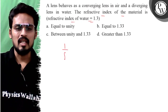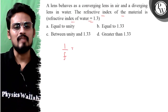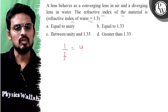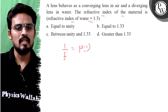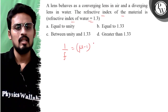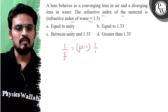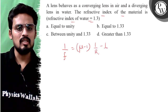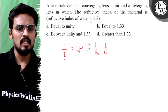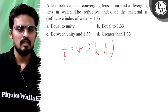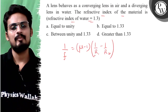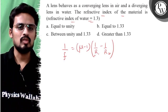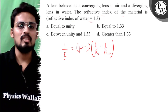The lens maker's formula says that 1/f = (μ - 1)(1/R1 - 1/R2). Okay, easy — now let's think about it. A lens behaves as a converging lens in air.